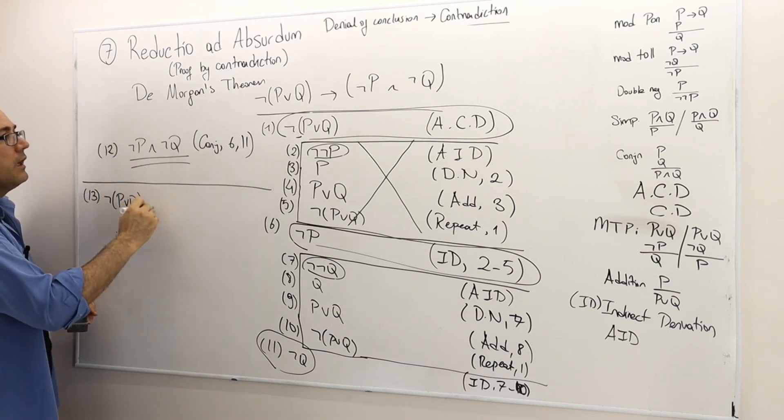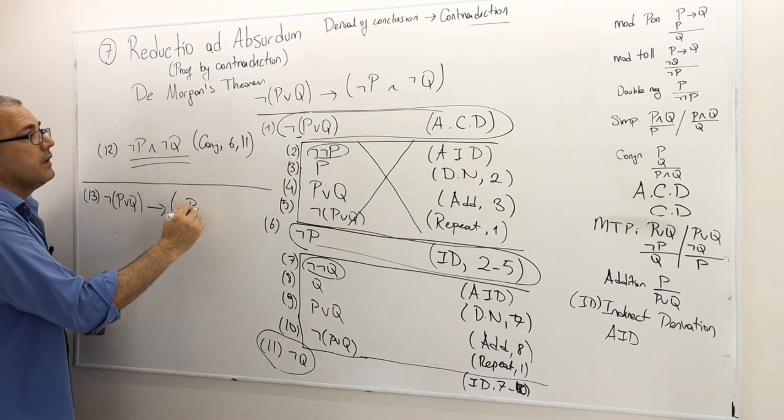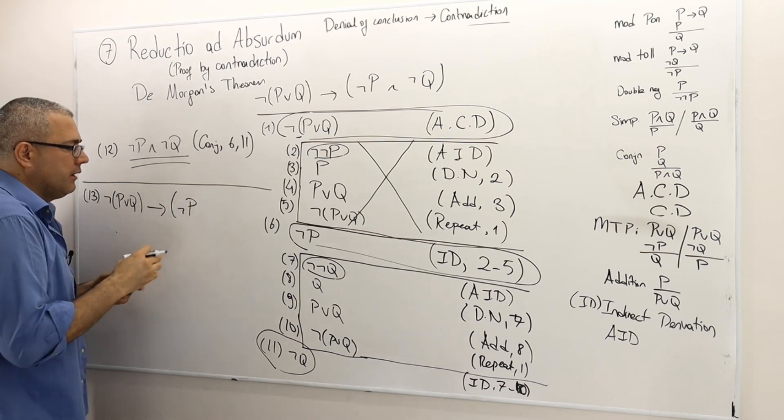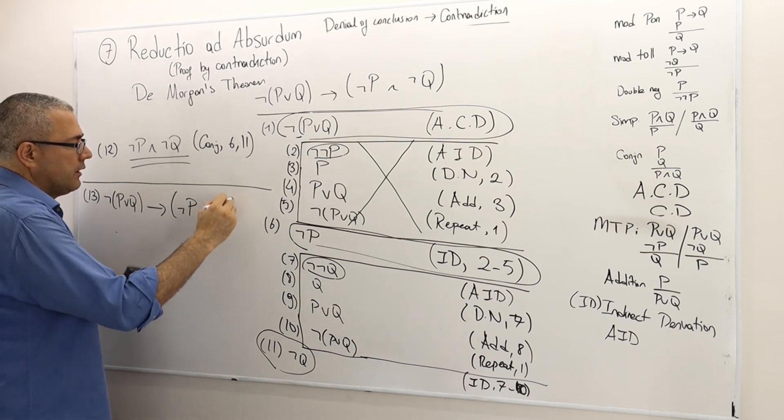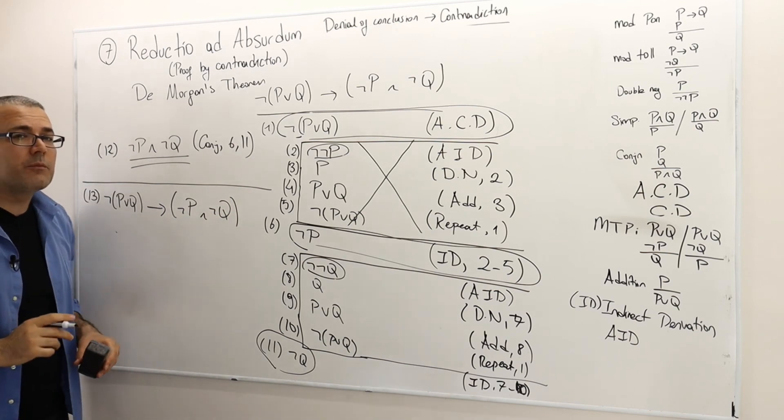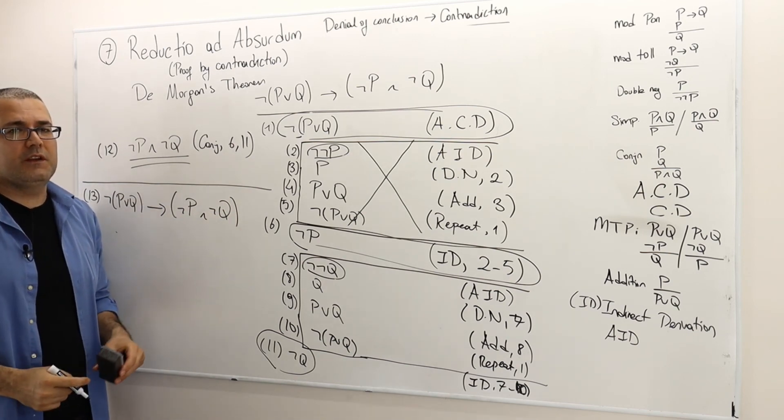Not P or Q implies not P and not Q is a true statement. This is the proof of this theorem.